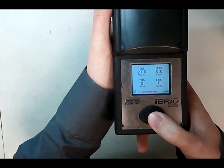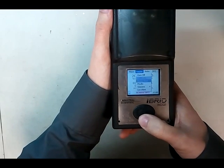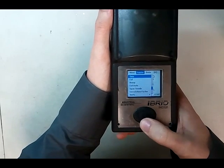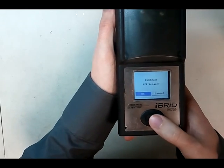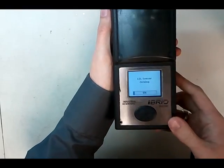Now we're going to calibrate this to pentane. Go down to Sensor, Sensors, LEL, and Cal. Calibrate LEL sensor, click OK, and it's going to zero.